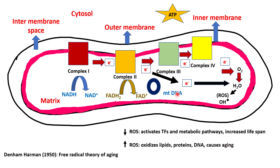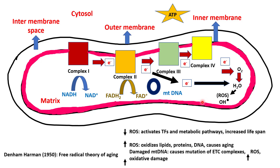Mitochondrial DNA is especially susceptible to oxidative damage due to its proximity to the site of production of these species. Damage to mitochondrial DNA causes mutations, leading to production of ETC complexes which don't function properly, increased ROS production, and increasing oxidative damage to macromolecules — all of which ultimately accelerate the aging process.